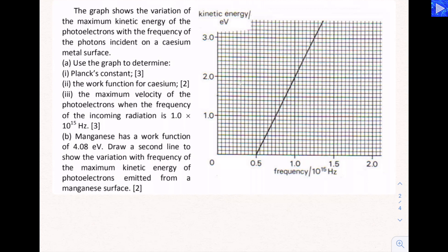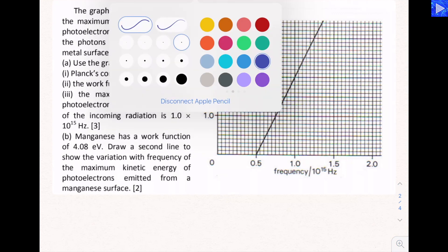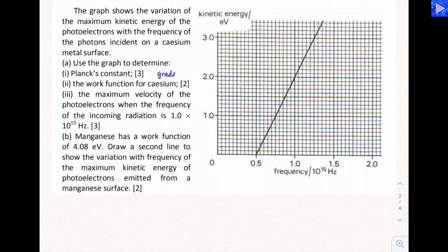The first question part A requires us to use the graph to determine some things. In part 1 we need to determine Planck's constant. This is a question about gradient because Planck's constant is given by the gradient of a graph like this. Before we start writing anything down, I need to highlight a couple of things. Something I sometimes fail to do myself is check the quantities and any conversion factors on the axes. You can see on the y-axis for kinetic energy those values are in eV, so we will need to do conversions there. And the frequency is in 10 to the 15 hertz, so we'll also need to do conversions there.